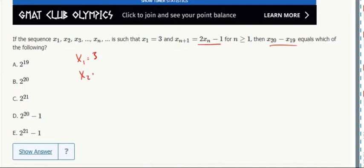The first one is 3, the second one is 2 times 3 minus 1, 2 times 5 minus 1, and 2 times 9 minus 1.